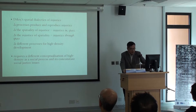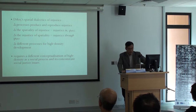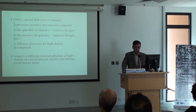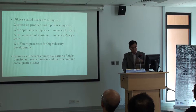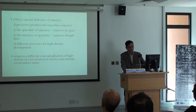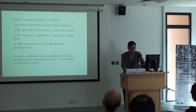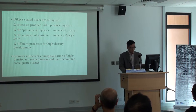The second person we would like to interrogate is Soja's spatial dialectical justice. He argued that we shouldn't just look at things, but at processes — and these processes produce and reproduce injustice. He talked about two processes: one is the spatiality of injustice, that injustice will have spatial implications and spatial manifestations; the other is the injustice of spatiality, which is that spatiality is produced and reproduced through space. What we are arguing is that we really need a different conceptualisation of high density as a social process related to social justice issues.